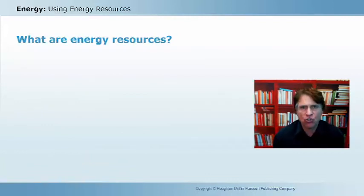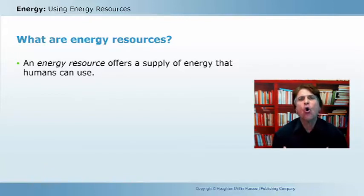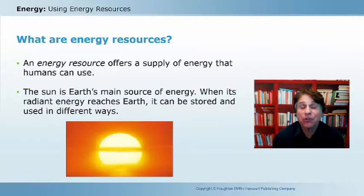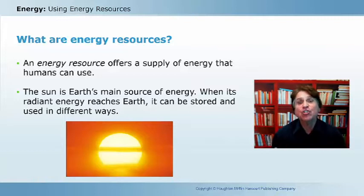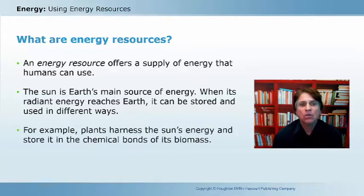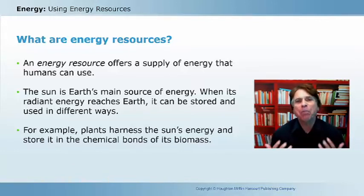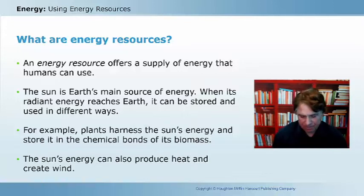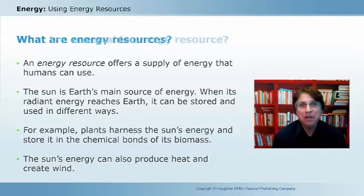What about energy resources? Energy resources offer a supply of energy that humans can use. The primary source of energy for those of us on this planet is the nearby star called the sun. When its radiant energy reaches the earth, that energy can be stored and used in different ways. Plants harness the sun's radiant energy and store it in the chemical bonds of their biomass. The sun's energy can also produce heat, create wind, and create ocean currents.